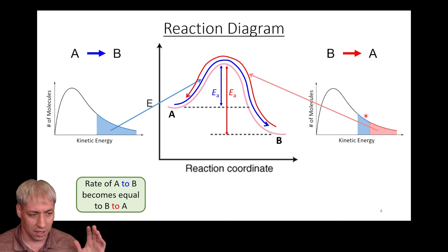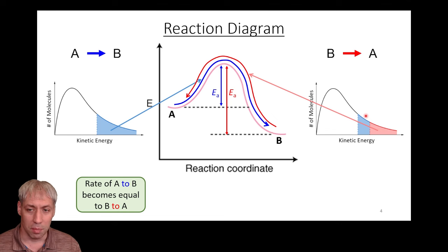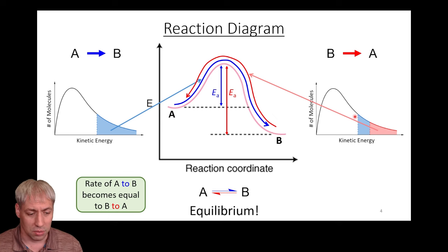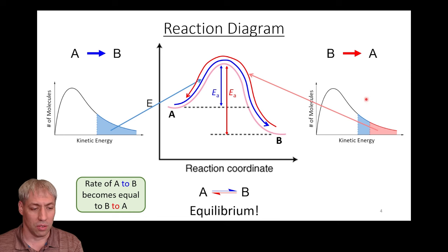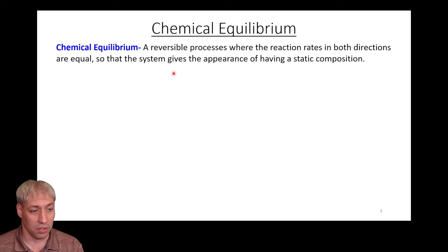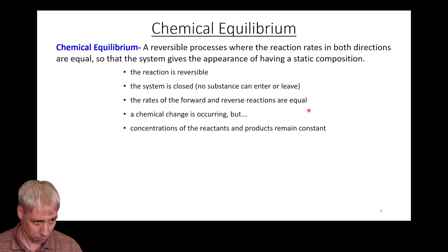With most reactions, you're going to go both ways over this hill. At some point, even if you start out with all A or all B, you're going to reach a condition where the number of A's turning into B's equals the number of B's turning into A's — the rate of the forward and reverse reactions become equal. That's what we call equilibrium, where A transforms into B and B transforms into A. The formal definition: a reversible process where the reaction rates in both directions are equal, giving the system an appearance of having a static composition.